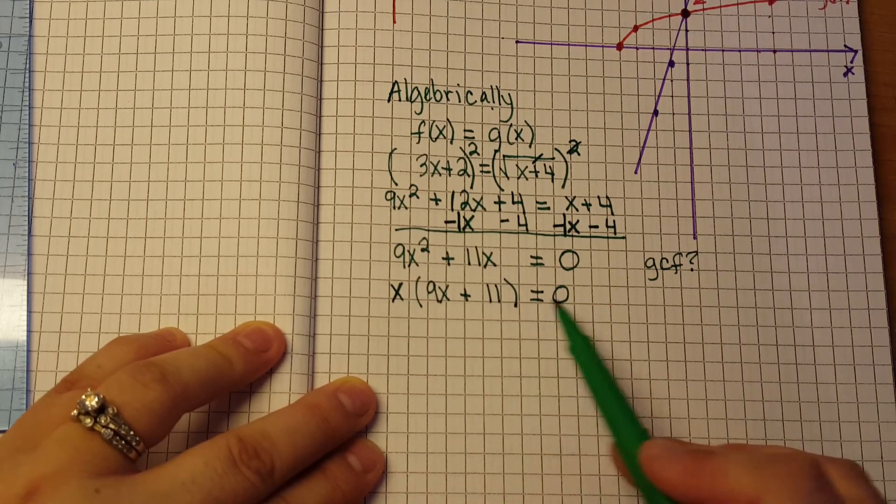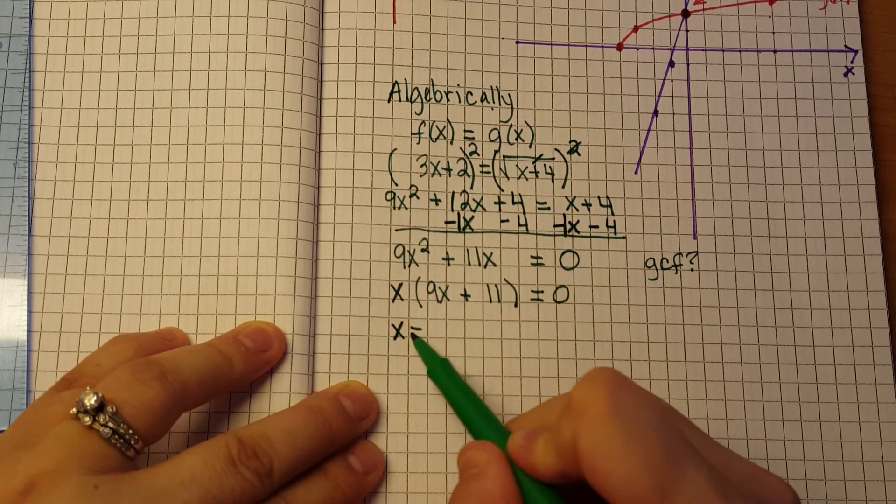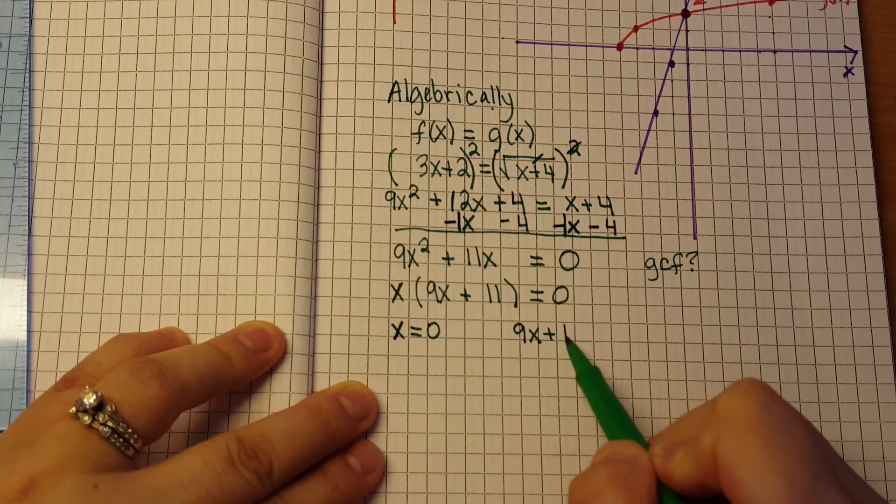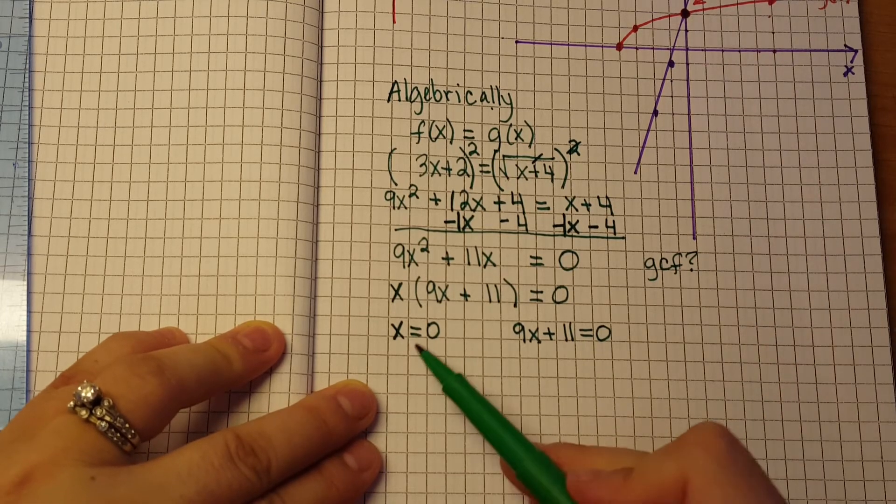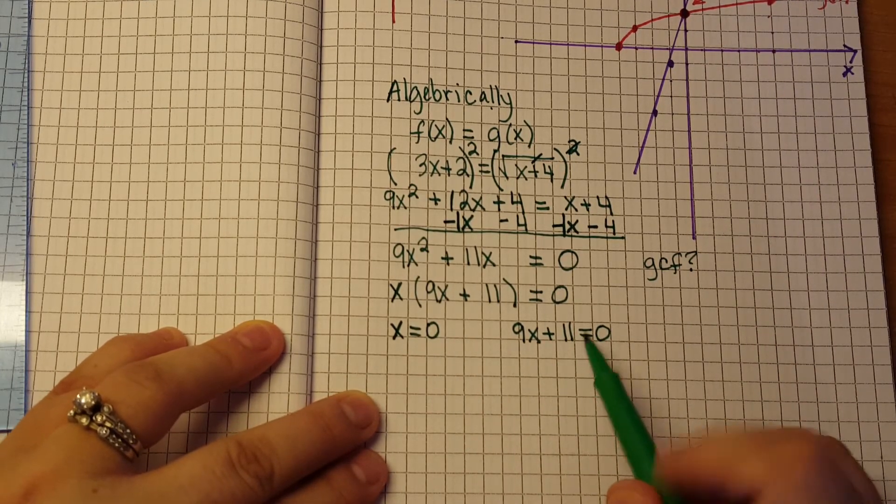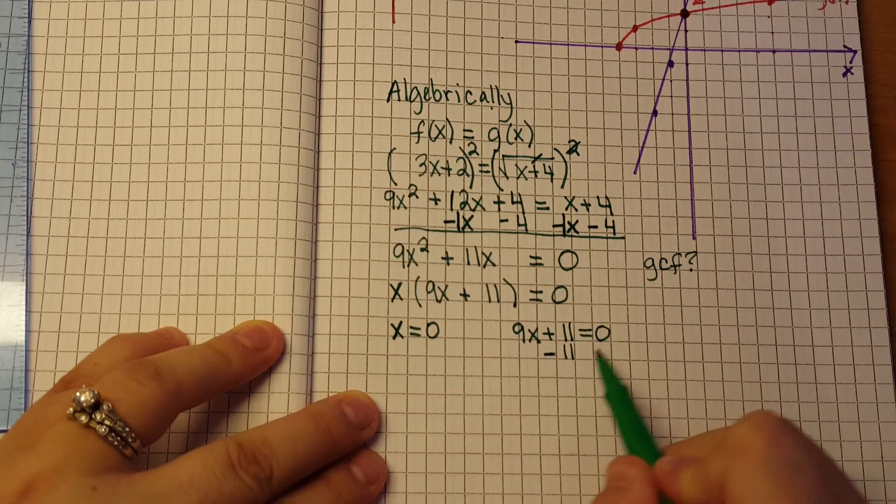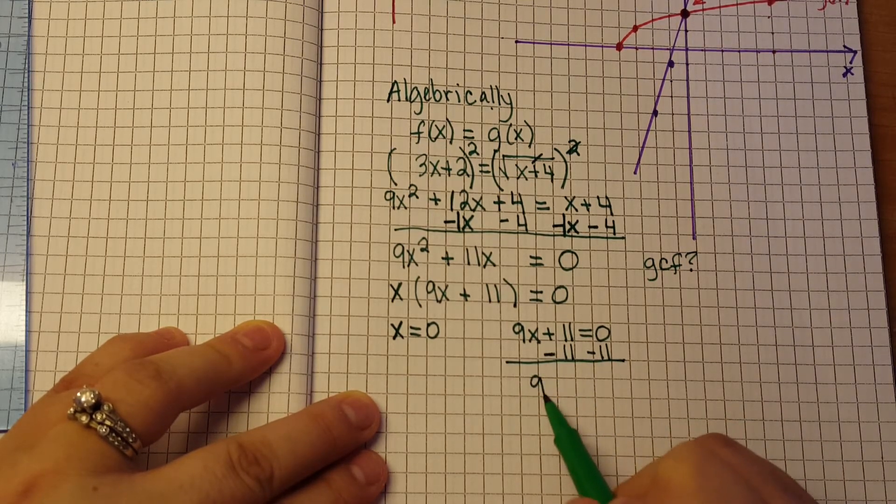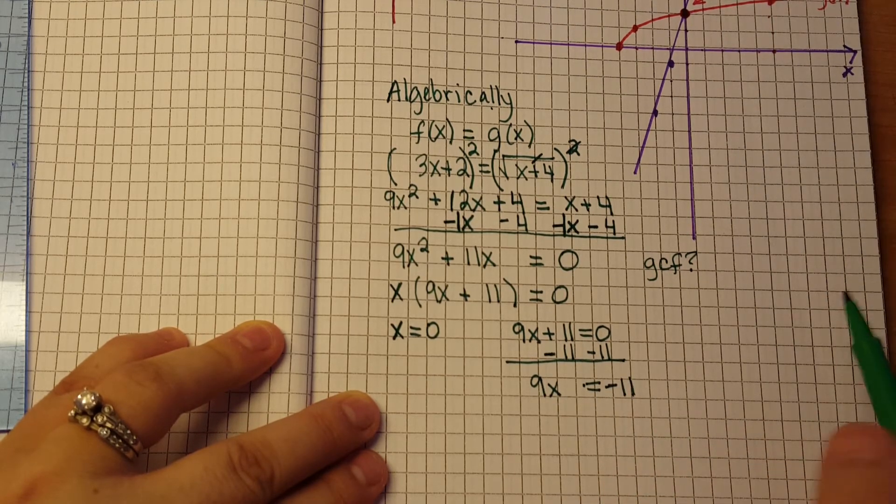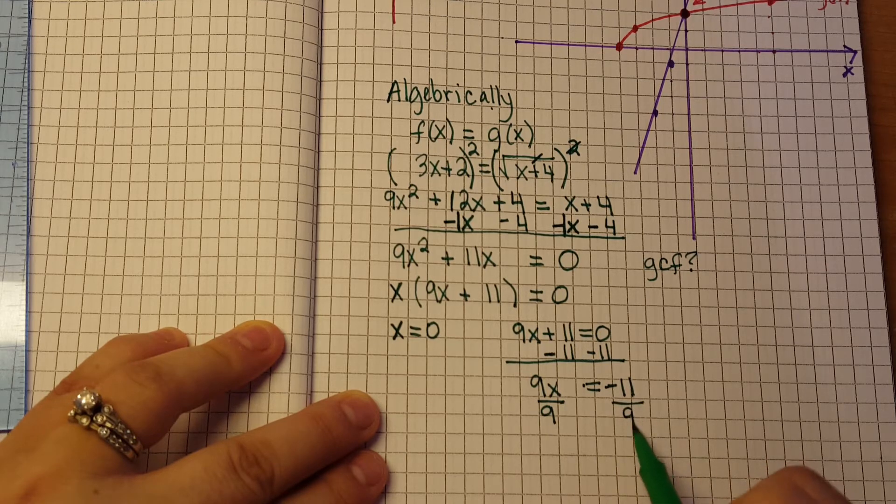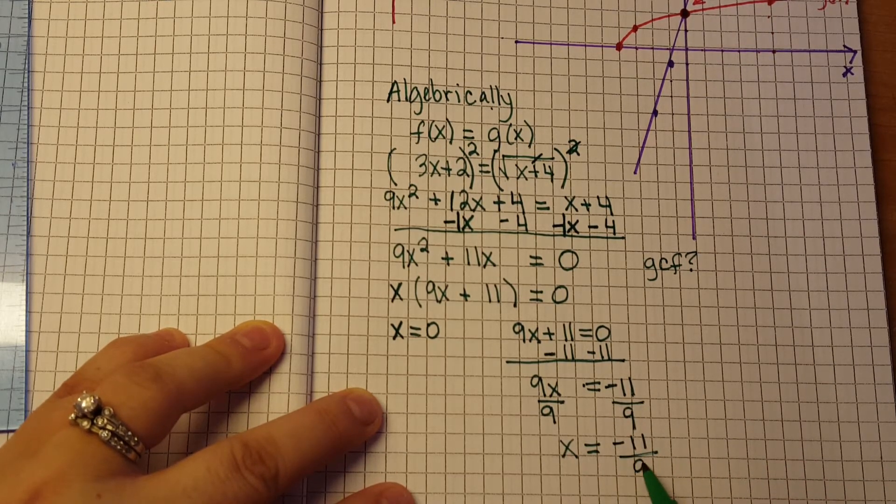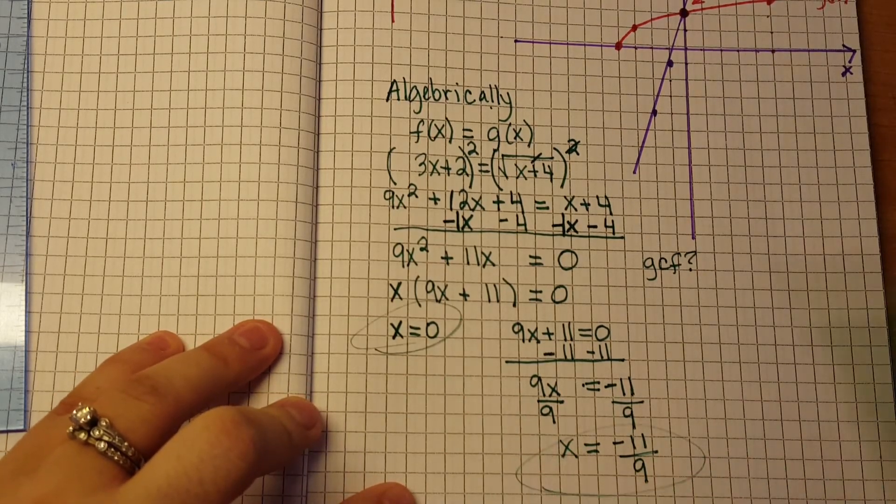Okay now we have 2 things that we're going to set equal to 0. So we're going to have x is equal to 0, and then we're going to also have 9x plus 11 is equal to 0. X is equal to 0 is already solved for us, so we have this equation that we need to solve. So we're going to go subtract 11 from both sides. We're going to end up with 9x is equal to negative 11. Then we need to divide by 9, and we're going to get x is equal to negative 11 over 9. Alright, so we have these 2 solutions.